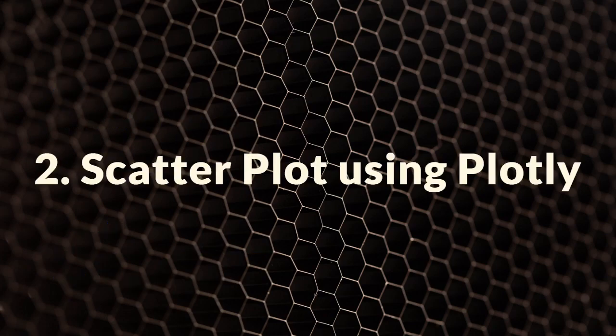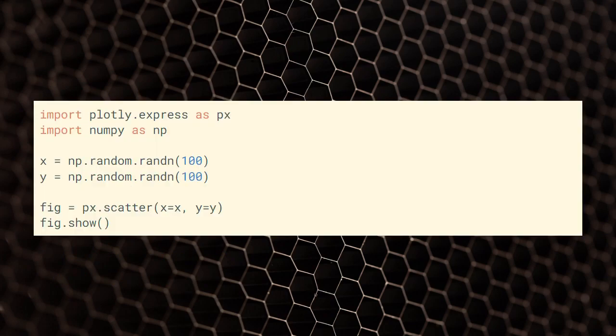First, we will create a simple scatterplot using Plotly. Here's an example of how to create a scatterplot using Plotly. We import the necessary libraries and then create a scatterplot with a set of random data points. You can see the code on the screen.